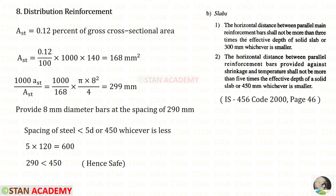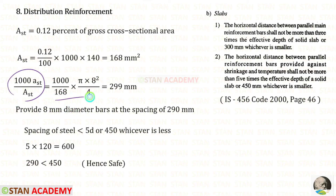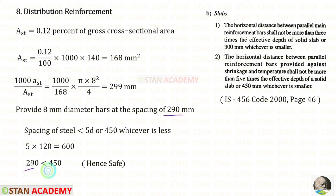Now we are going to design the distribution reinforcement. We provide the minimum reinforcement of 168 mm². Using 8 mm diameter bars and applying the spacing formula, the spacing rounds to 290 mm. Checking the spacing limit of 450 mm, our spacing of 290 mm is less than 450 mm, so it is safe.